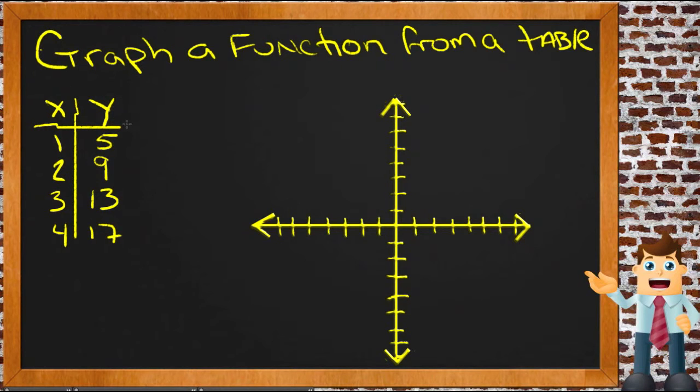So here we have the table from a previous lesson that we used where we figured the function, where we sort of calculated what the function would be and we wrote it out and our function was 4x plus 1 equals y. So with this function we take a number, whatever it is, in this case we'll start with 1, and we multiply that number by 4. 4 times 1 is 4, and then we add 1 to it. So 4 times 1 is 4 plus 1 is 5.